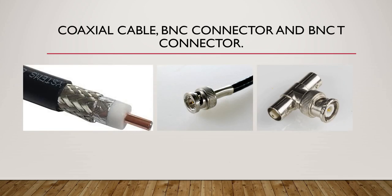In the diagram of coaxial cable, the center is the copper wire, followed by an insulator, then outer mesh wires, and finally a jacket. The two connectors used in coaxial cable are the BNC connector and the BNC T-connector. These cables are very similar to the cables used in television.